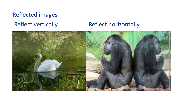Every time you look in the mirror, you see a reflected image of yourself. I have two pictures on the screen. One is a swan swimming in a pond — we see the swan and the reflected image of the swan in the pond. The swan's image is reflected vertically because the image is upside down. We also see a gorilla leaning up against a glass wall, so the gorilla is there along with its reflected image in the glass. The gorilla's image has been reflected horizontally, as its image has just been flipped over to the right.